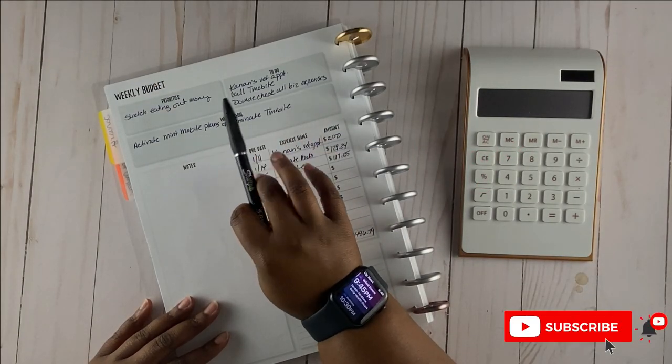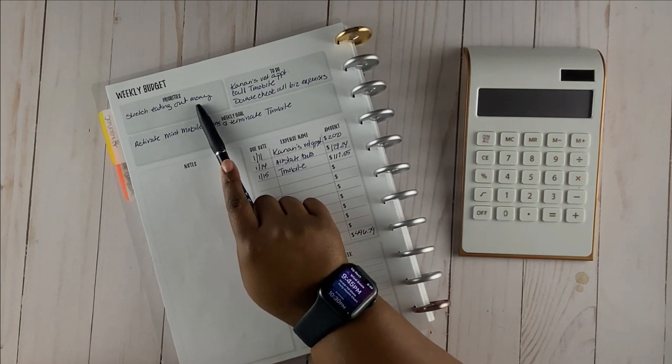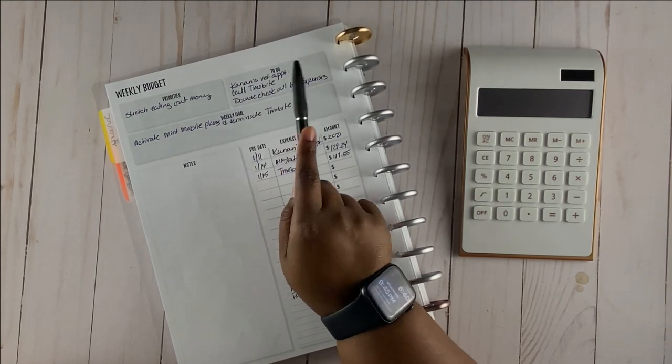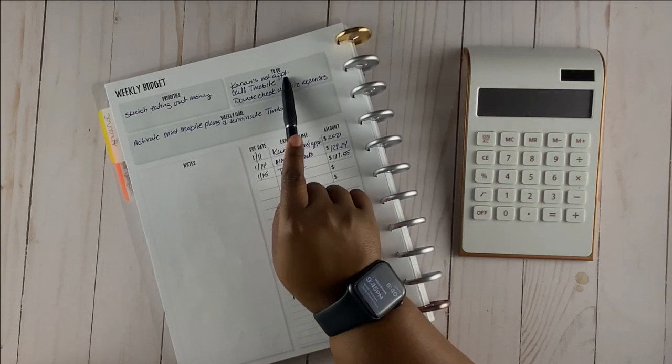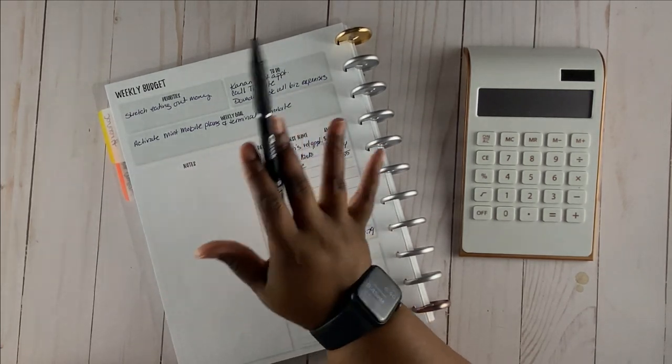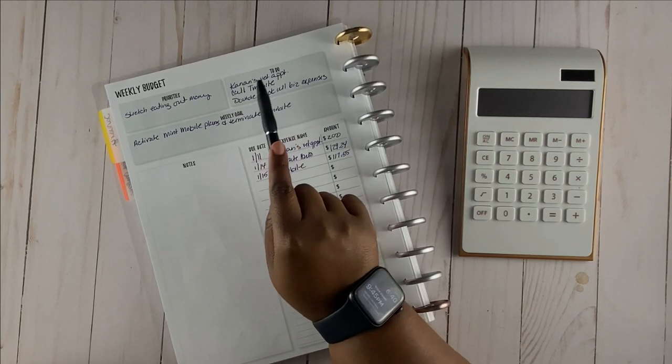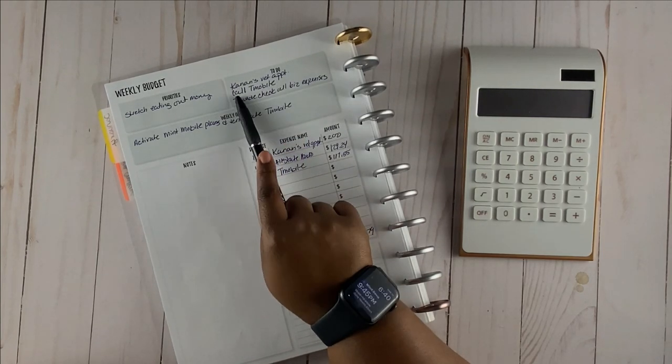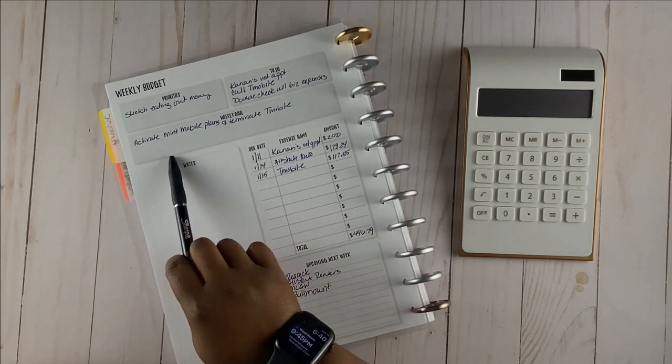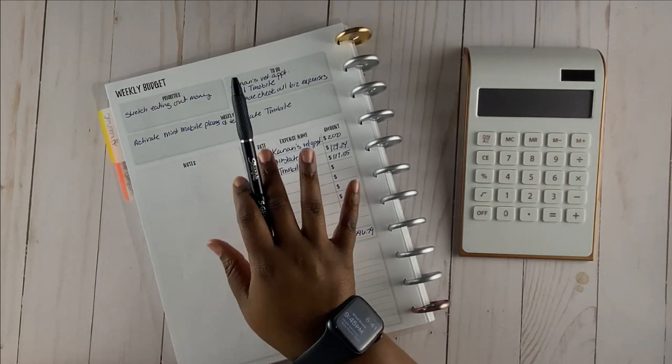As far as my to-dos and weekly goal, I did not fare well. For my to-do list, I only completed really, I did pretty okay. I had three to-dos for last week. I took Kane into his vet appointment, I did double check all business expenses to make sure everything was coming out for my business credit card. I did not call T-Mobile, however, and that was kind of one of the bigger to-dos. My weekly goal, which was to activate the Mint Mobile plans and terminate T-Mobile, that did not happen last week either, but I plan to definitely do that this week.